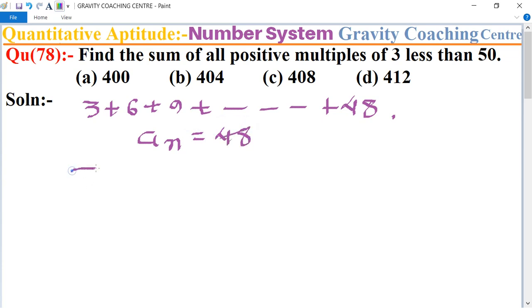Its formula is a plus n minus 1 d equal to 48. The value of a is 3 and common difference is also 3, n minus 1 equal to 48.